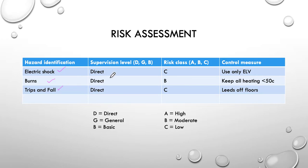I'm going to use direct supervision for each of those things. The risk assessment was somewhere between low and medium and where I'm going to control those things is to use only extra low voltages, keep any heating of things up to less than 50 degrees C and keep leads off the floor.